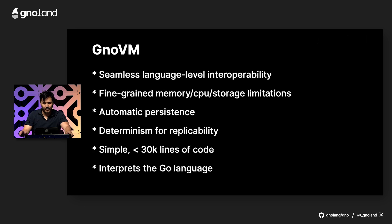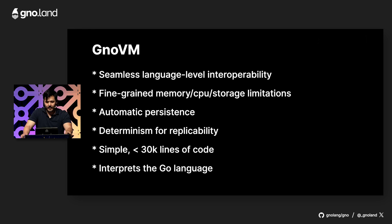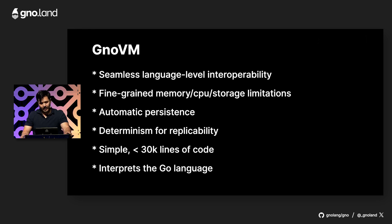This is why we built the Gno VM. It's a virtual machine that offers seamless language-level interoperability without the complexity. It has fine-grained memory, CPU, and storage limitations — which is needed for calling untrusted code. It automagically persists values to disk after every transaction, so you don't need to worry about databases or leaky ORMs. It's deterministic by design. The architecture is simple and intuitive — right now it's less than 30,000 lines of code. And most importantly, it runs programs written in Go.